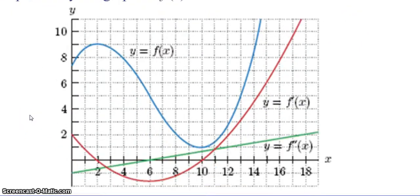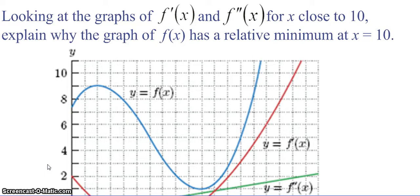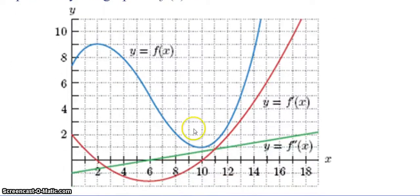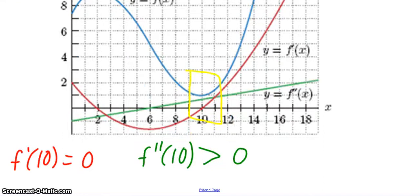Here we have the function as the blue curve, the derivative as the red curve, and the second derivative as the green curve. Looking at the graphs of f′ and f″ for x close to 10, why does the graph have a relative minimum at x equals 10? The function has a relative minimum because the first derivative is 0 at x = 10, and the second derivative is positive, which tells us the function is concave up. Therefore, by the second derivative test, that is a relative minimum.